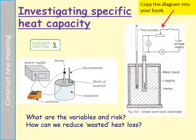There are two ways you can do the method. You can use a voltmeter to measure the voltage and an ammeter to measure the current, and from that you can find the power. Once you know the power transferred to the heater, you can work out the energy transfer in a certain time. Alternatively, instead of measuring volts and amps, you can use a joule meter, which will measure the energy transferred from the power supply to the block.